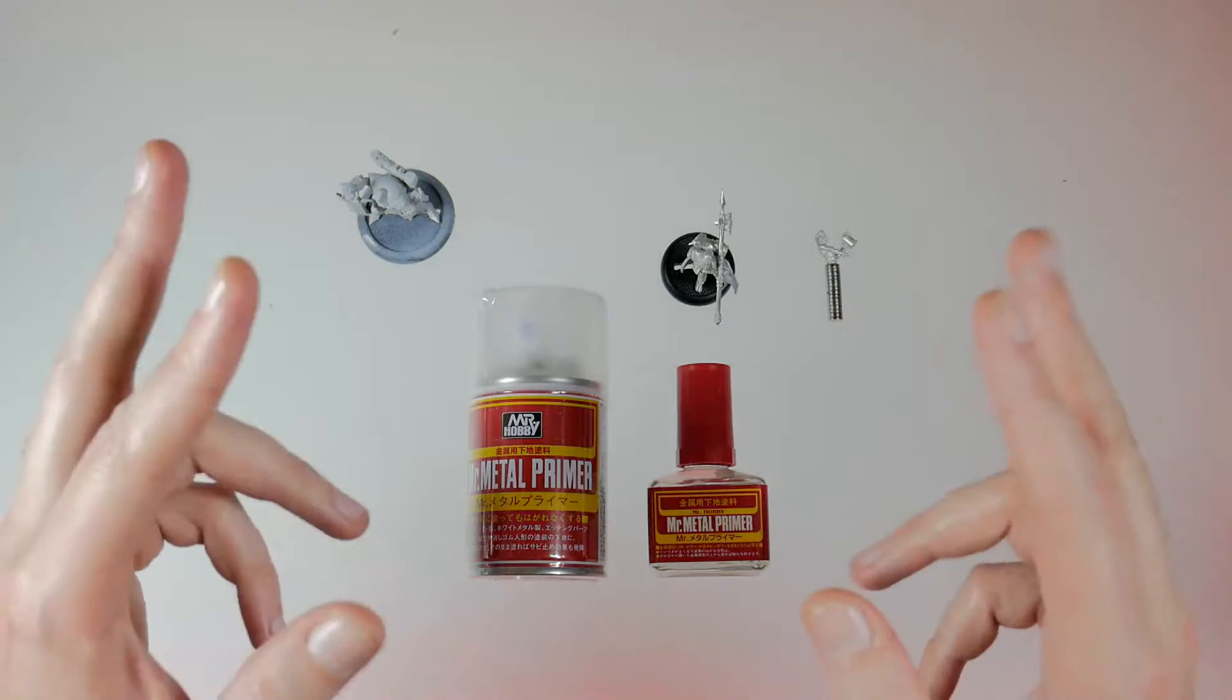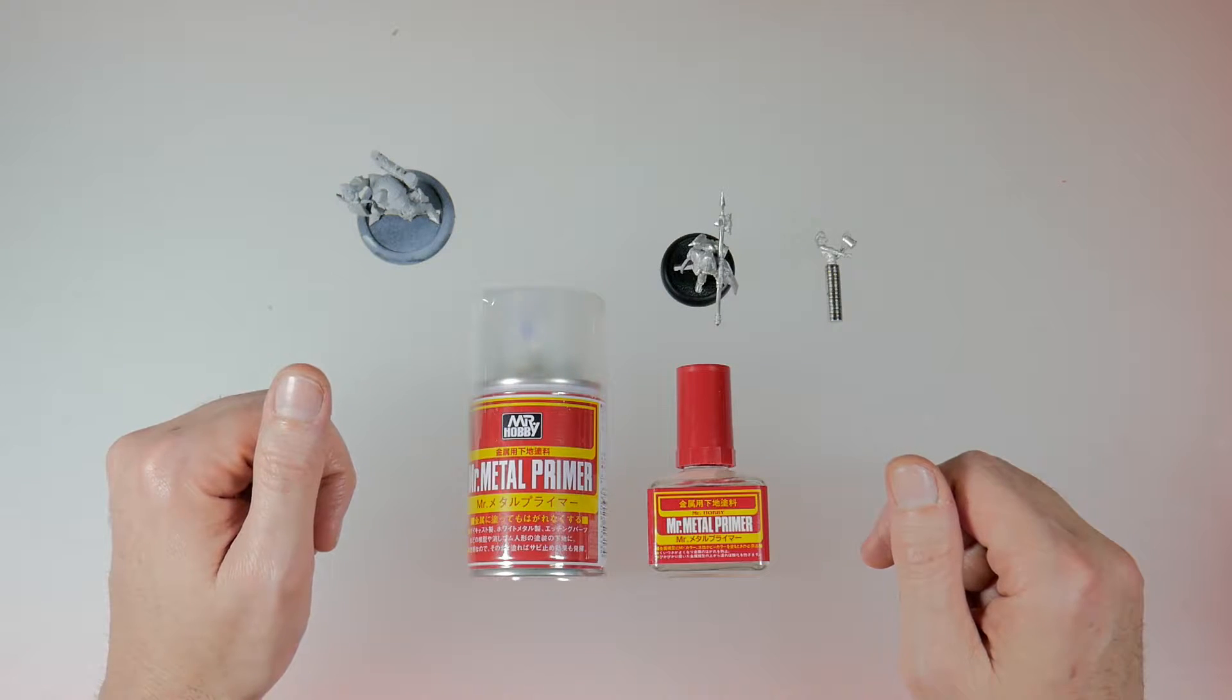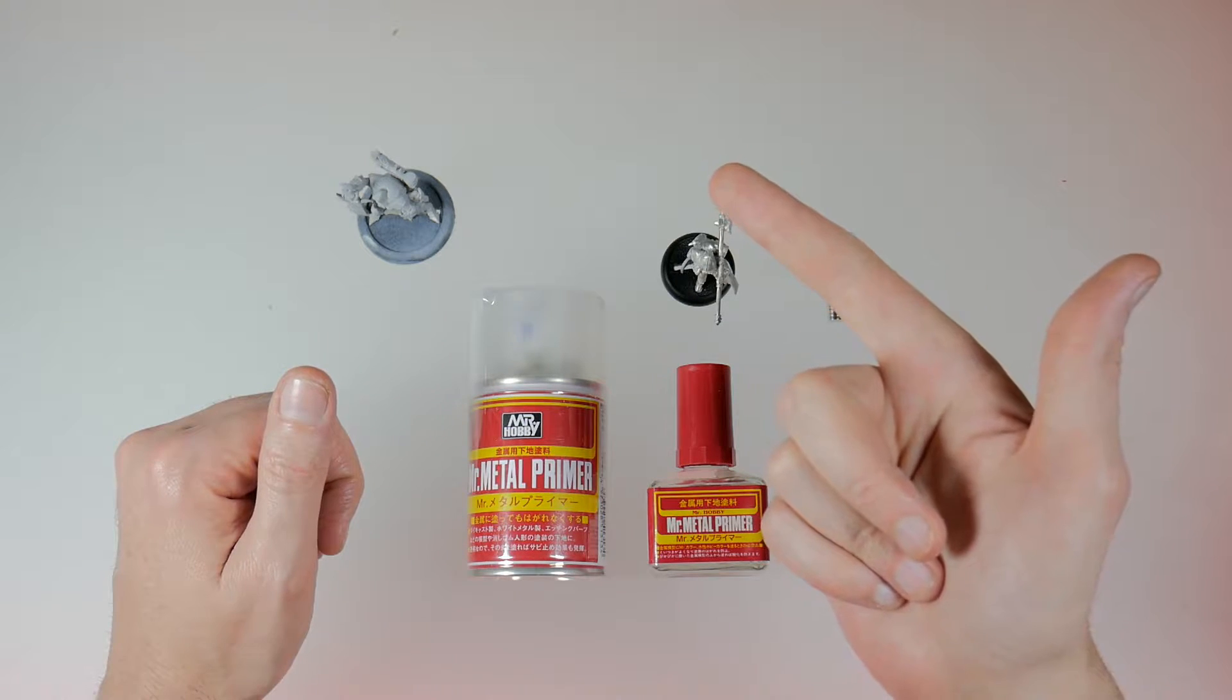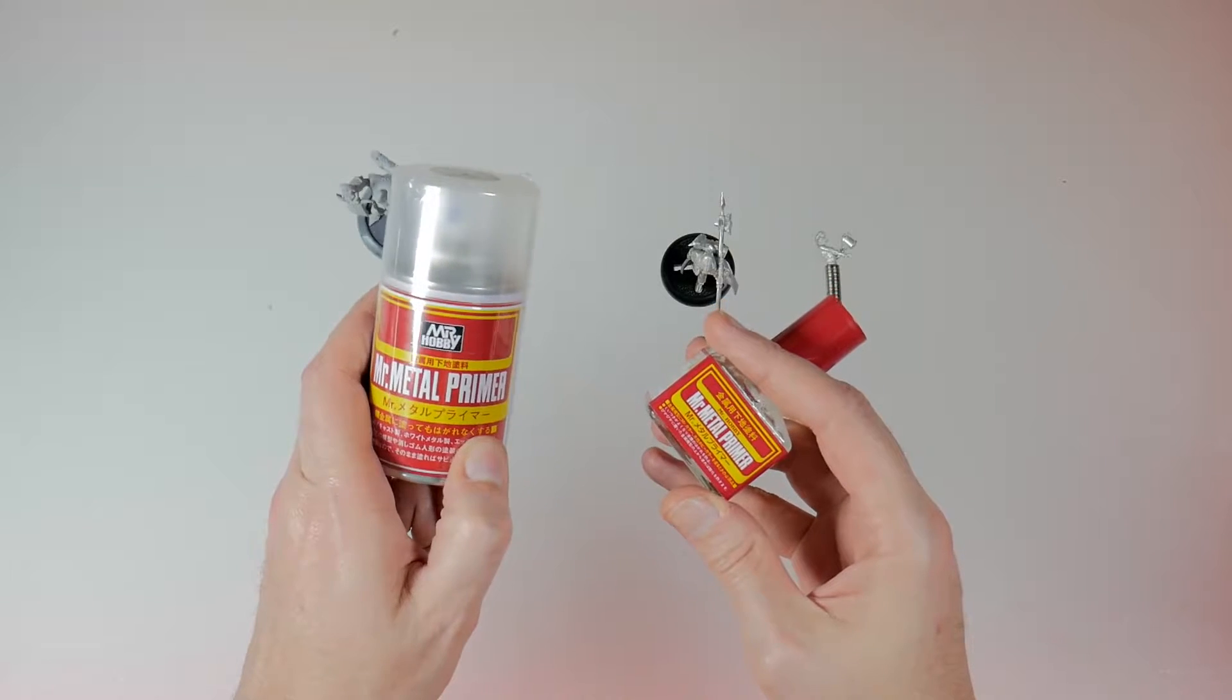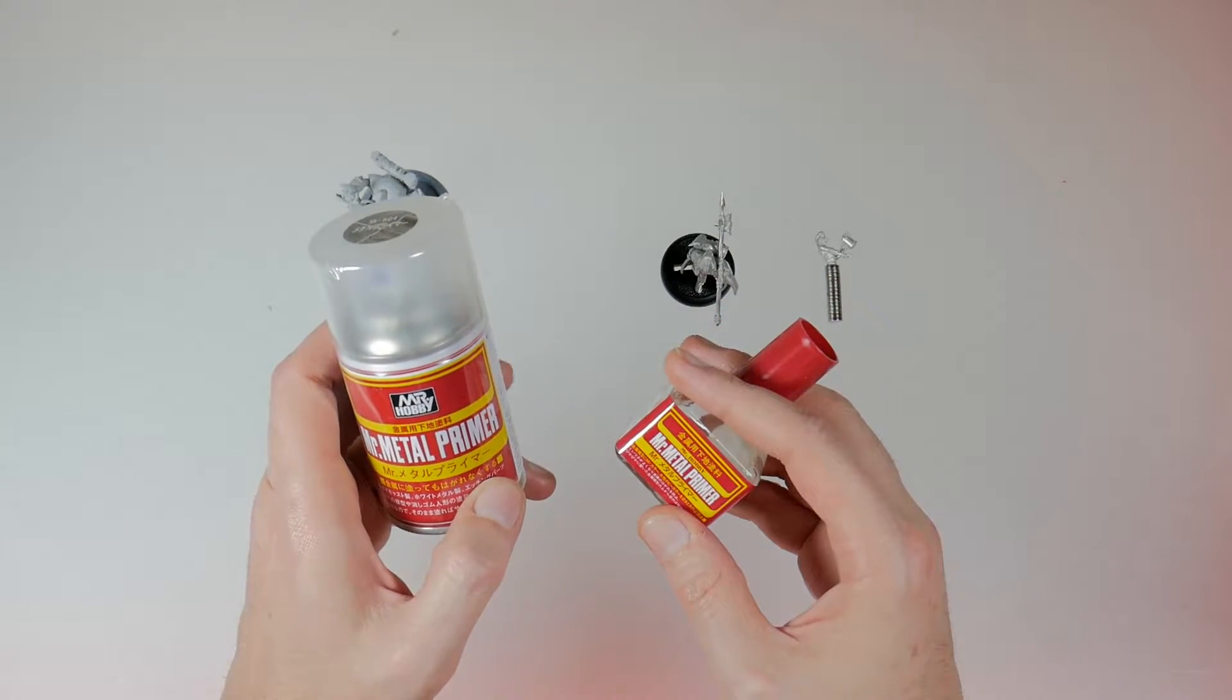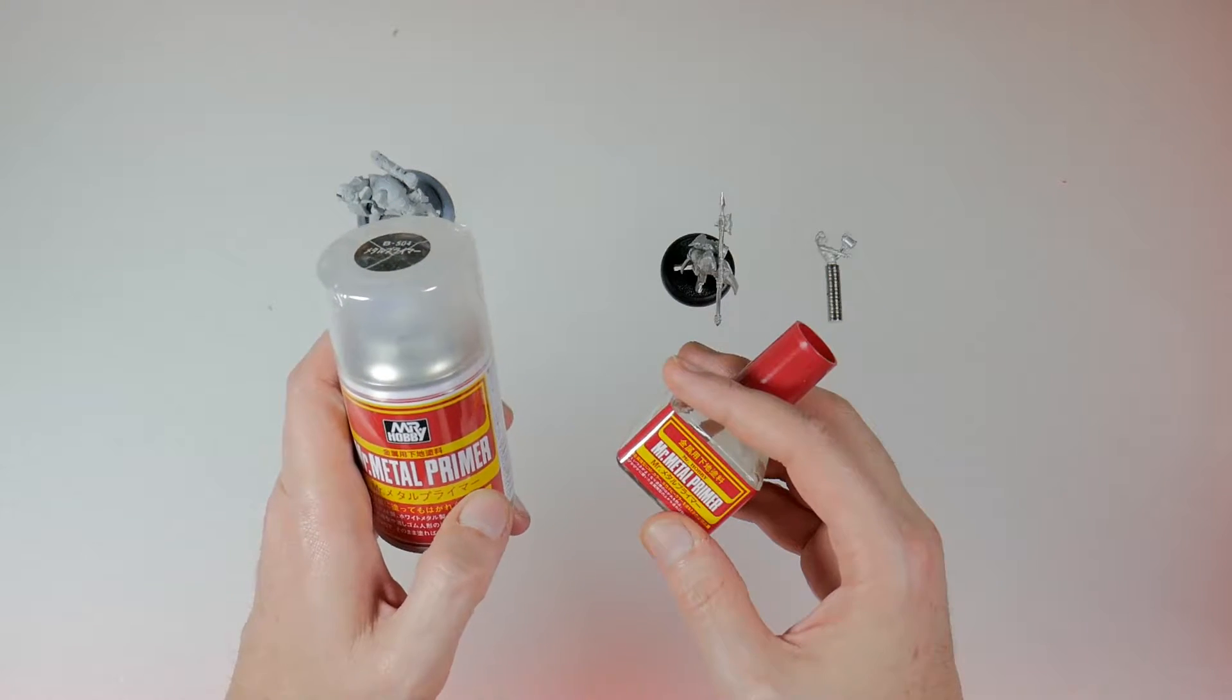Now this isn't just for minis, I suggest using it for your photo etch whether it be for your Gunpla, military kits, anything like that. I have two containers here: these are Mr. Hobby Mr. Metal Primers. I'm pretty sure there are other companies that make these but these work so well for me.